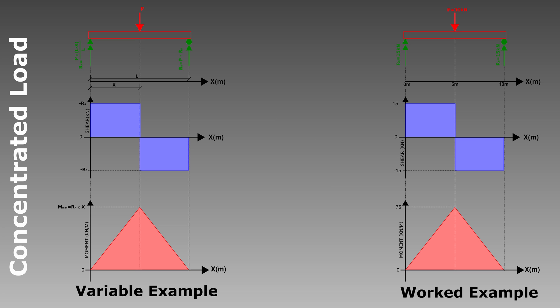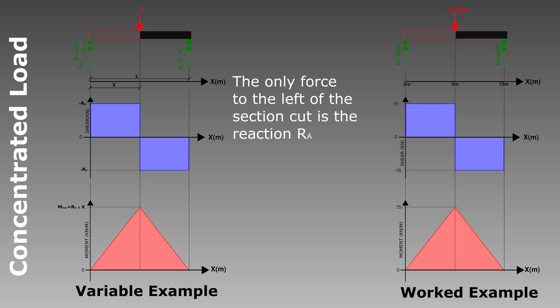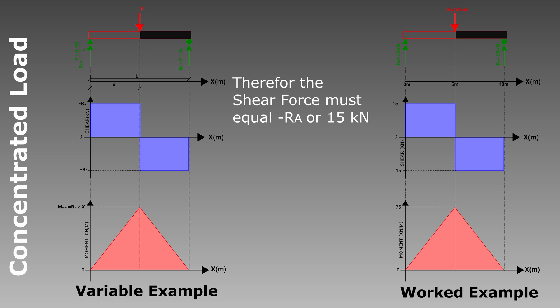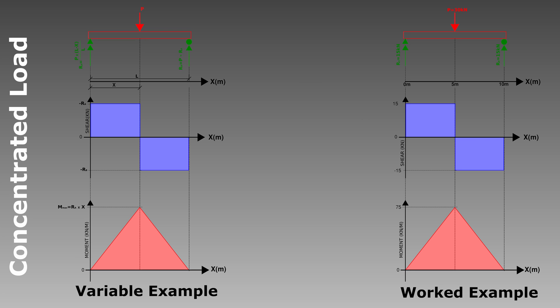Now let's derive the shear force diagram. We take a section cut through the beam and look at all the forces to the left of that point. Since we're cutting at the concentrated point load, it is not seen in this section cut, so the only force to the left is the reaction force RA. Therefore the shear force at that point equals RA, giving us a straight line. In our worked example, the reaction force is 15 kN and we draw a straight line across until we get to our point load.